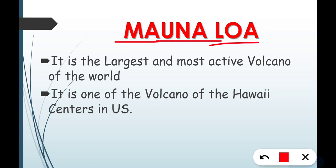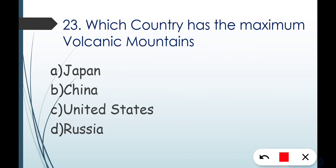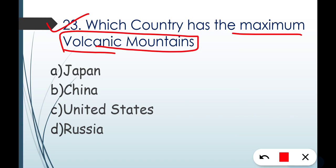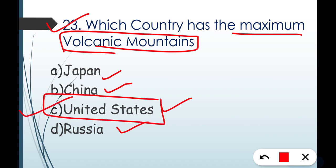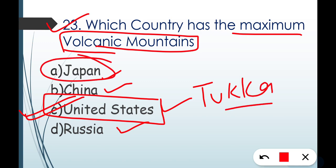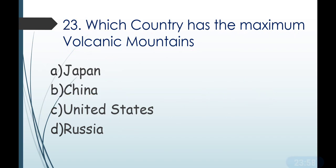Mauna Loa is the largest and most active volcano in the world. It is one of the volcanoes of the Hawaii Islands in the US. Question number twenty-three: which country has the maximum volcanic mountains? Options are Japan, China, US, or Russia. The correct answer is USA — Option C. Don't assume Japan or Indonesia just because they are near the Ring of Fire.